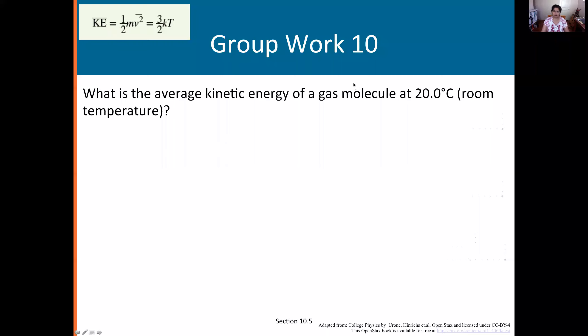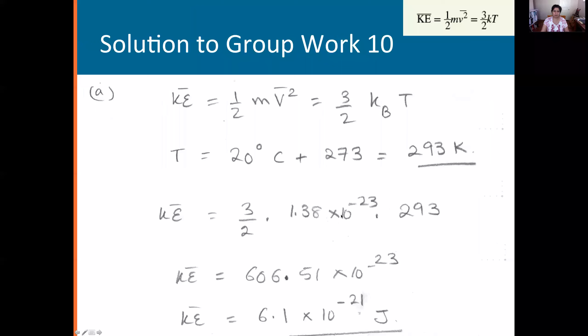Instead of average kinetic energy, you're going to find this value out on the left-hand side by setting it equal to 3 by 2 KB times T. You need to convert it to Kelvin. The only thing you need to do is use your calculator. So that works out to be 293 Kelvin. Put that value in here. This is KB and you calculate the kinetic energy.